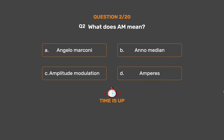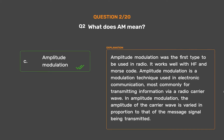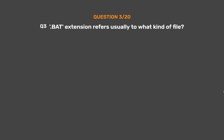The correct answer is Option C: Amplitude Modulation. Amplitude modulation was the first type to be used in radio. It works well with HF and Morse code. Amplitude modulation is a modulation technique used in electronic communication, most commonly for transmitting information via a radio carrier wave. In amplitude modulation, the amplitude of the carrier wave is varied in proportion to that of the message signal being transmitted.